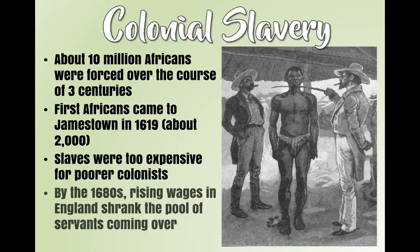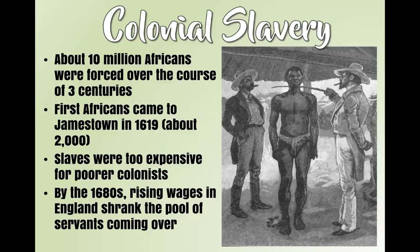Indentured servants were still seen as free men; slaves are seen as a piece of property — which is completely wrong. With slavery coming into the colonies, and the reason we're talking about this with the Southern Colonies: slavery is going to rule in the South and become super prominent. About 10 million Africans were forced over the course of three centuries to come to the Americas. The first Africans came to Jamestown in 1619. By the 1680s, rising wages in England shrank the pool of indentured servants coming over, creating more need for slavery.